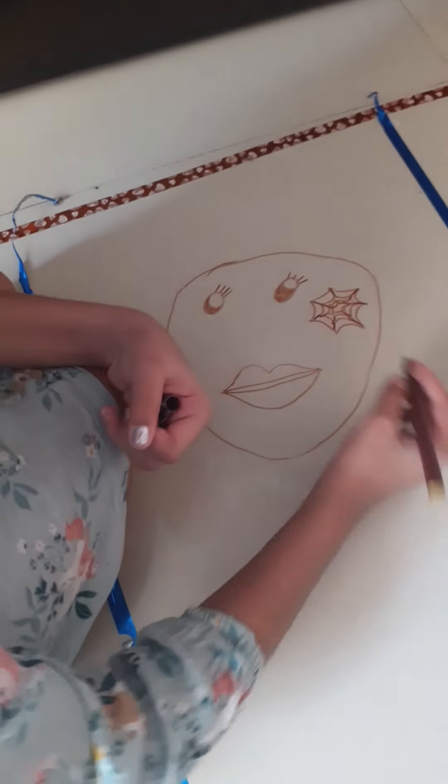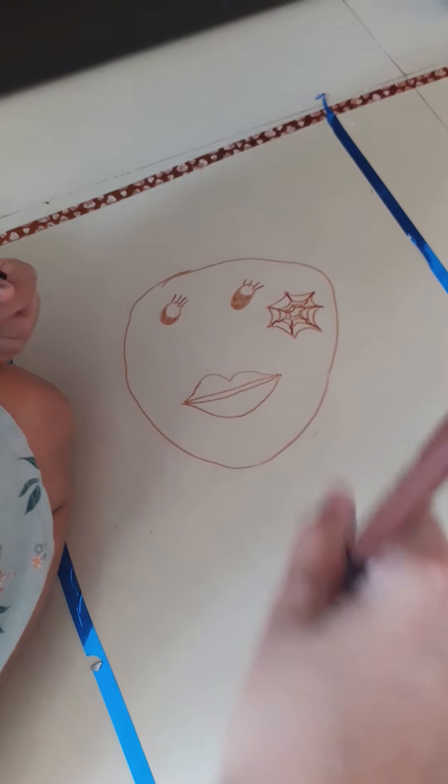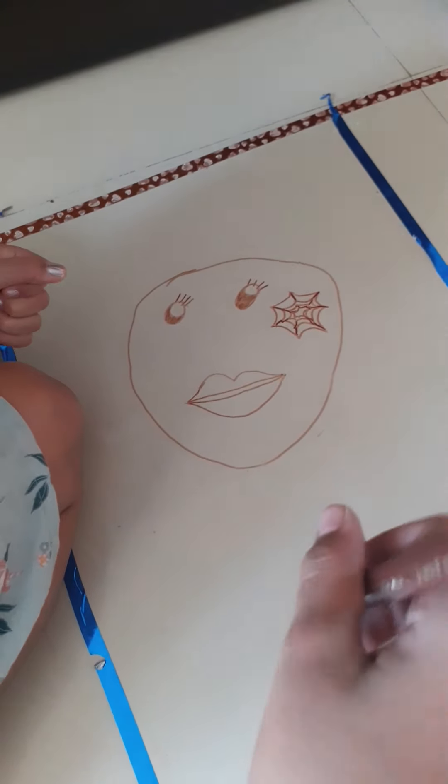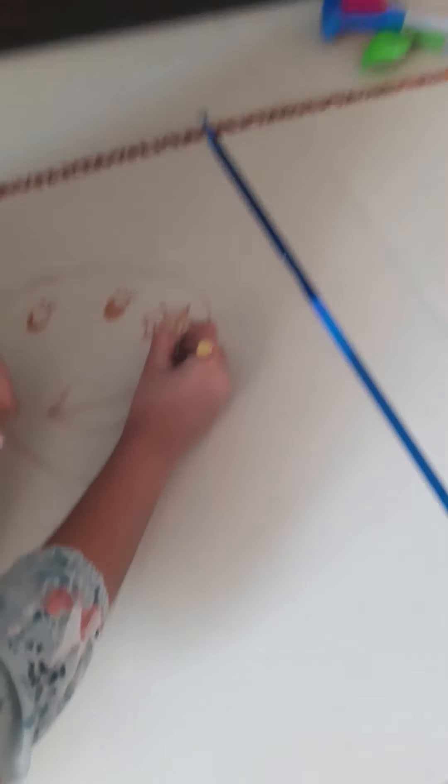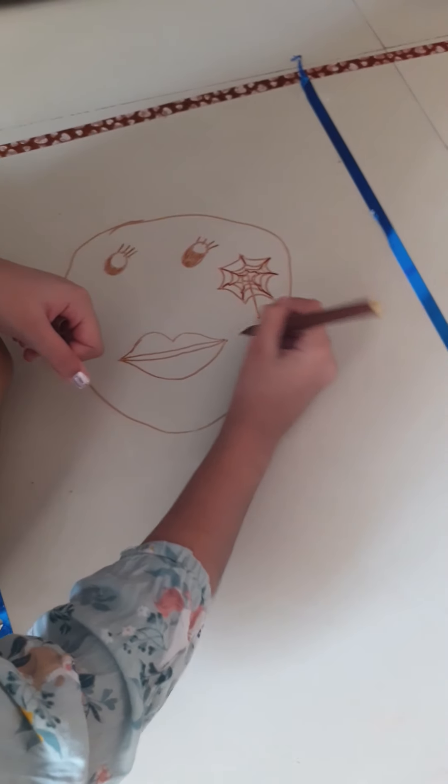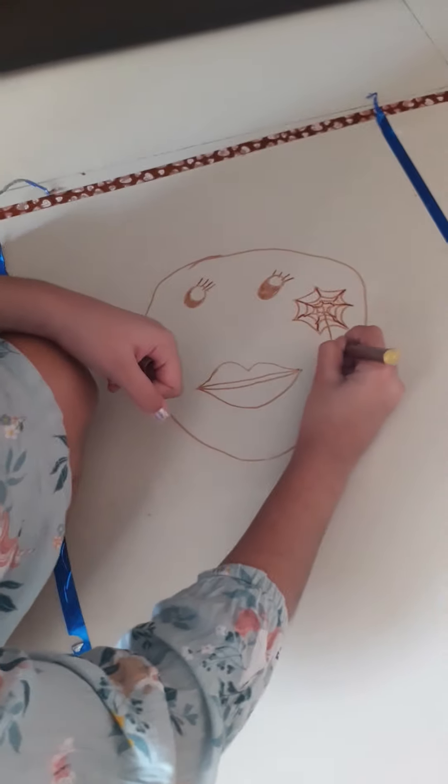Now we are going to make a spider hanging from the web. We just make a straight line starting from the center and end it here. And now make a small, simple spider.